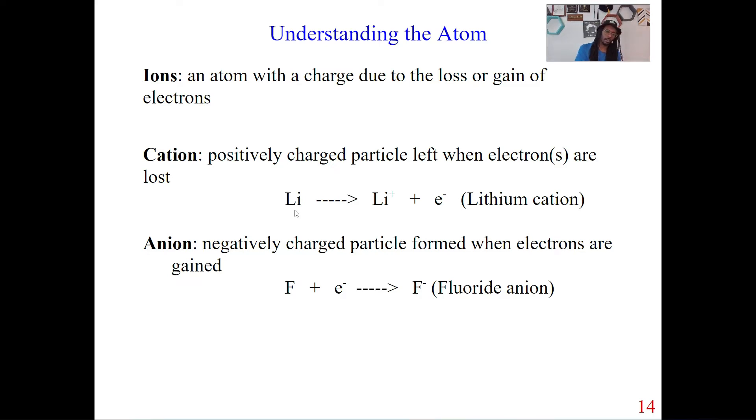Bam, electron is gone. Now, so when that lithium loses that electron, what's going to happen to that lithium atom? It's going to be a positive charge, because it lost that negative. That negative in being the electron. So because it lost the electron, now this is known as a cation. So this is a lithium cation.